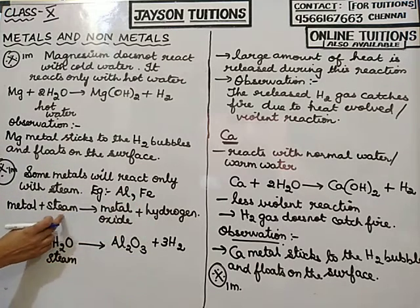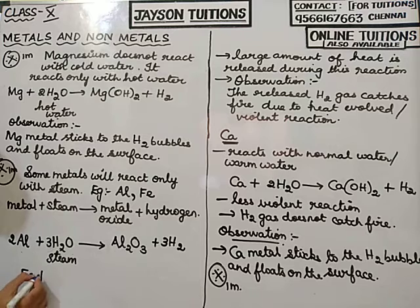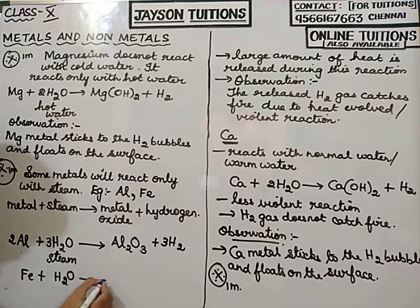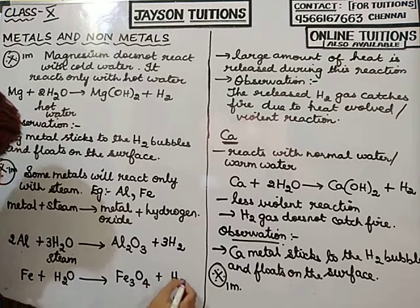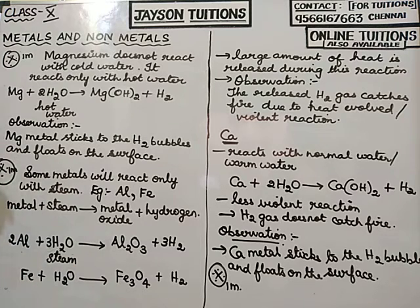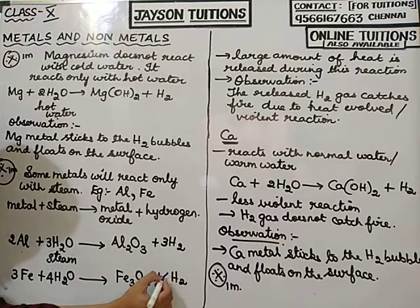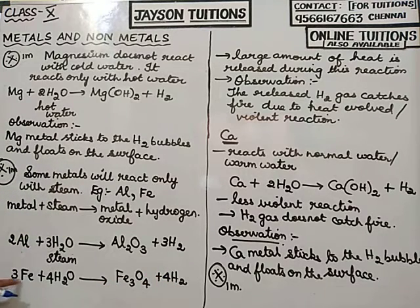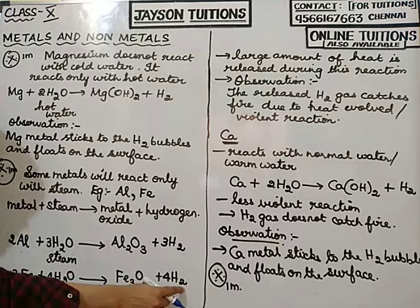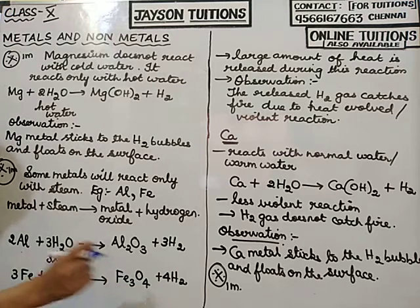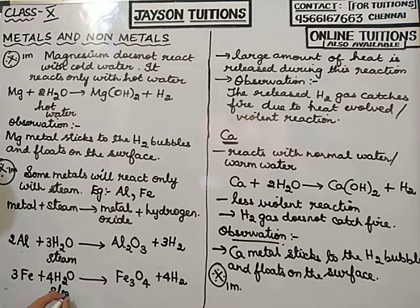Now iron with steam: Fe + H2O (steam) → Fe3O4 + H2. The balanced equation is: 3Fe + 4H2O → Fe3O4 + 4H2. Checking: 3 iron on both sides, 8 hydrogens on both sides, 4 oxygens on both sides.